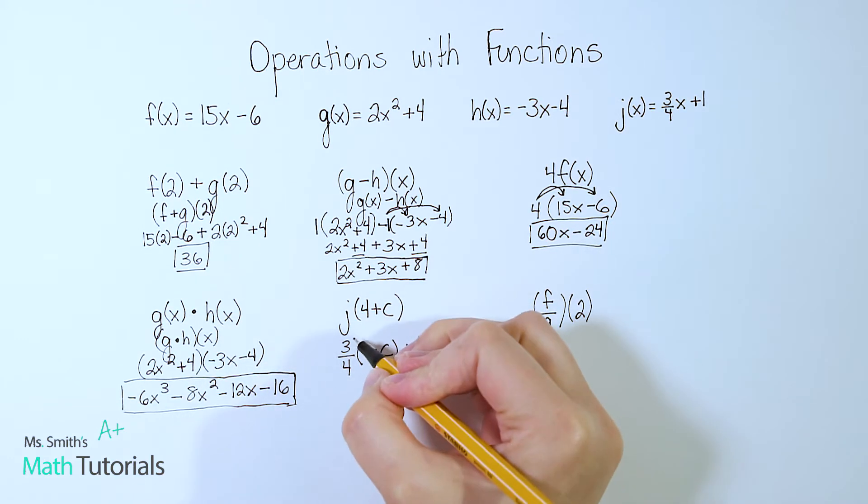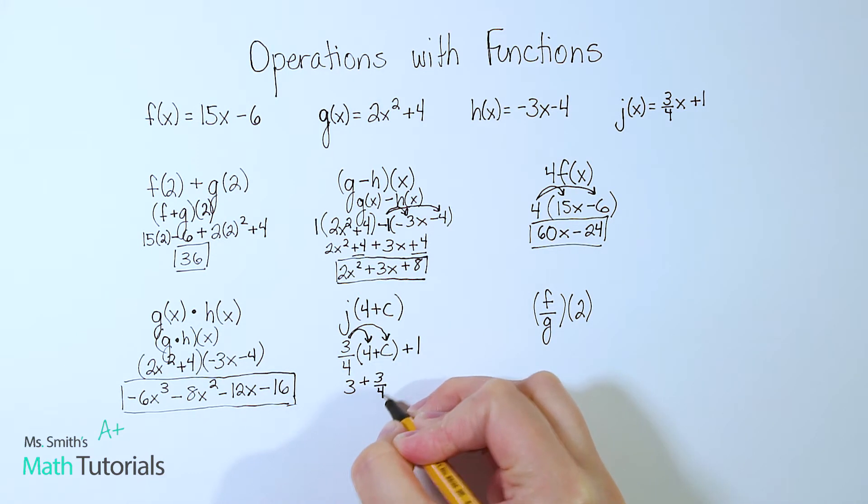So at this point, we do want to distribute that fraction into the parentheses set. It's okay that it's a fraction. It still works the same way. 3 fourths times 4 actually gives us a whole number. It gives us 3. 3 fourths times c is positive 3 fourths c. And now we've got this just plus 1 hanging out there. Remember, we only distribute to the parentheses, not beyond it. So of course, I want to combine any like terms. And I see I've got a 3 and a 1. So I'm going to go ahead and add those together. And I would have 3 fourths c. 3 plus 1 is 4. No other like terms. That is as simplified as it gets.